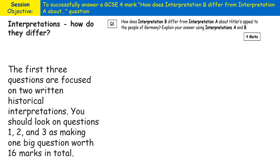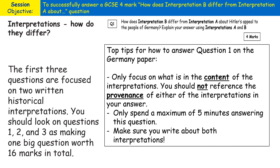So what do you need to do to achieve four marks out of four for this type of question? My top tips are as follows. Only focus on what is in the content of the interpretations. You should not — and I repeat not — reference the provenance. No information about where the sources come from, who made them, or when they were made. You only want to spend about five minutes maximum answering this question. And make sure you write about both interpretations — don't just write about interpretation A or interpretation B.